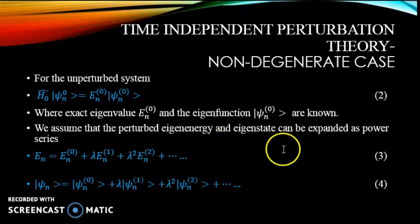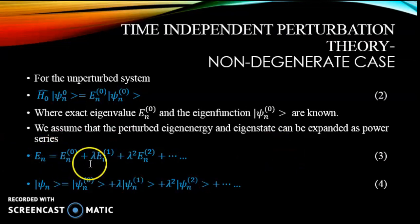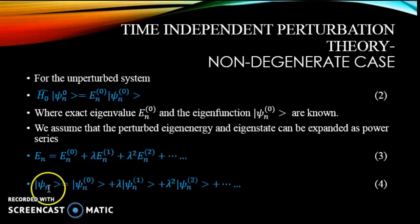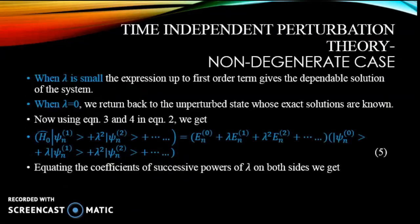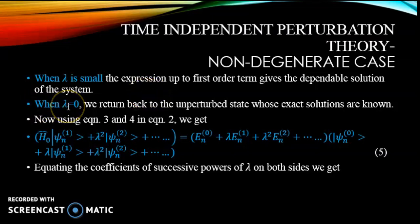We assume that the perturbed eigenenergy and eigenstate can be expanded as a power series: E_n = E_n0 + lambda E_n1 + lambda squared E_n2 and so on. Similarly, psi_n = psi_n0 + lambda psi_n1 + lambda squared psi_n2 and so on. When lambda is small, the expression up to the first order term gives the dependable solution of the system. When lambda equals zero, we return back to the unperturbed state whose exact solutions are known.